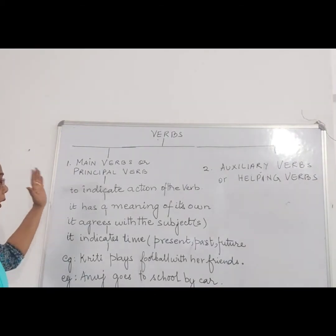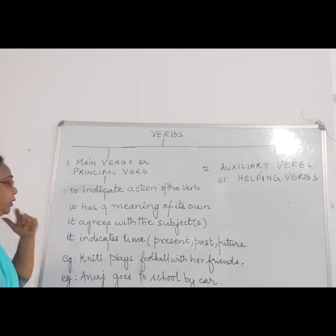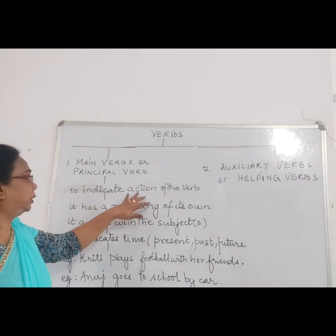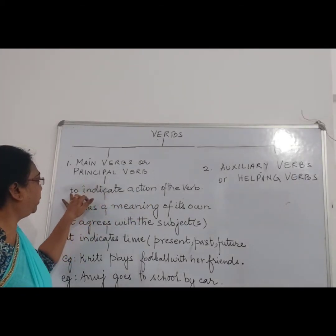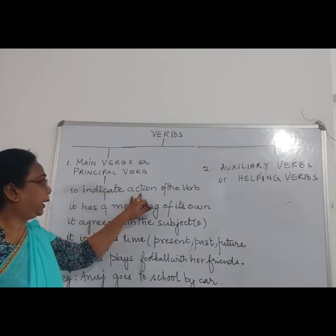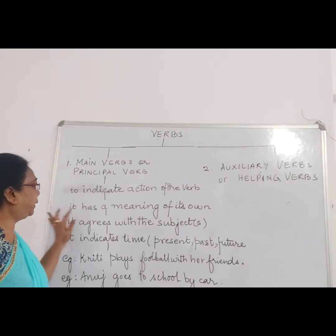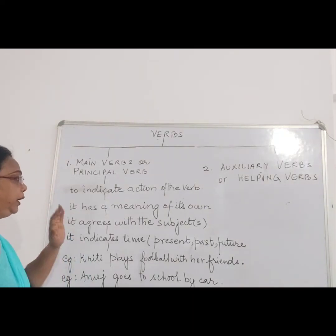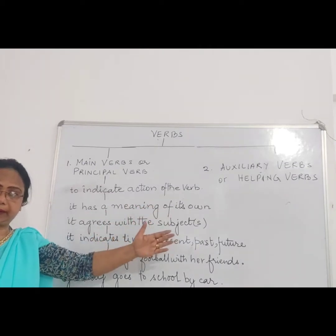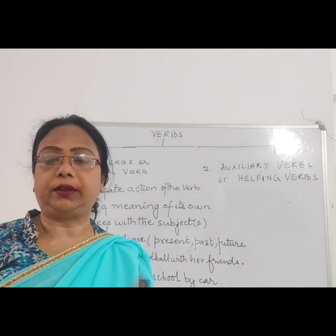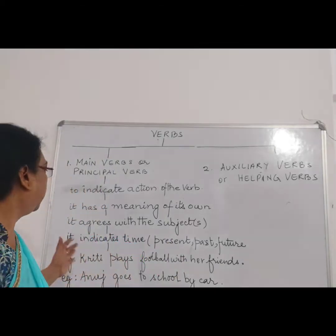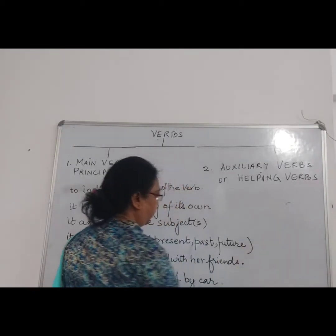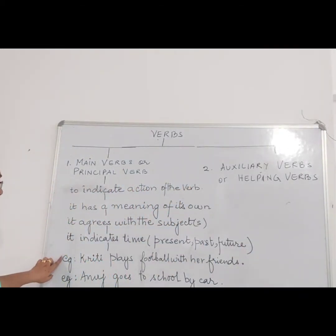What does the main verb or principal verb tell us in a sentence? It indicates — it shows. The principal verb is used to indicate the action of the verb in a sentence. The sentence has a meaning of its own. It also agrees with the subject or subjects. Subject means when you are talking about one person, subjects means more than one person. It also indicates the time — that is present tense, past tense, or future tense. Now let's see the example of the main verb.